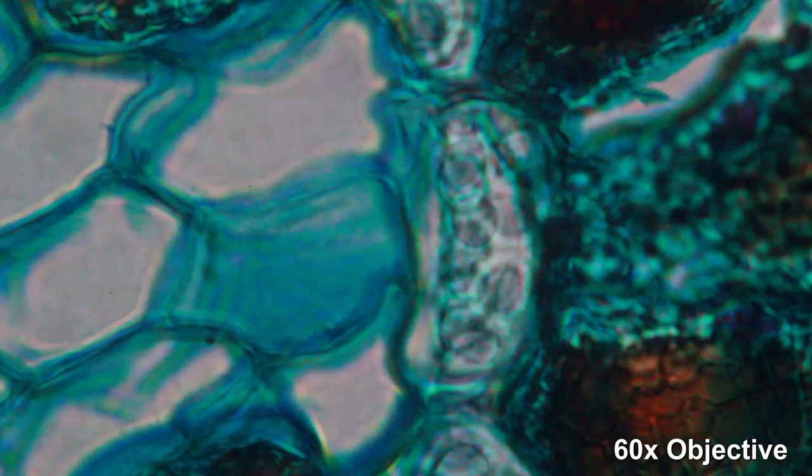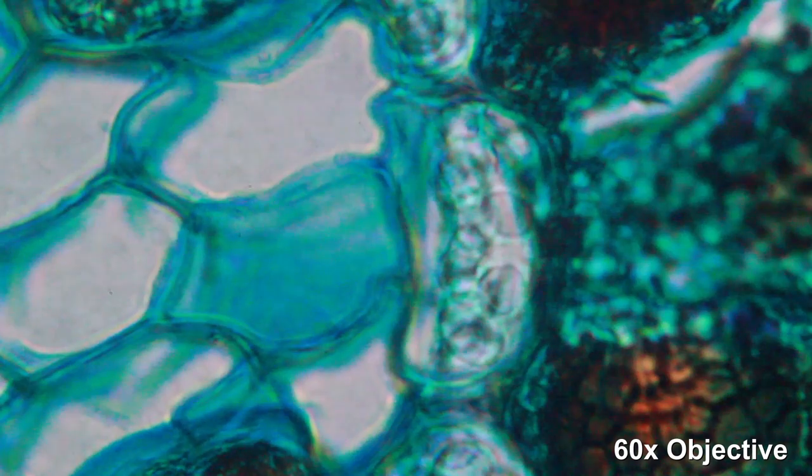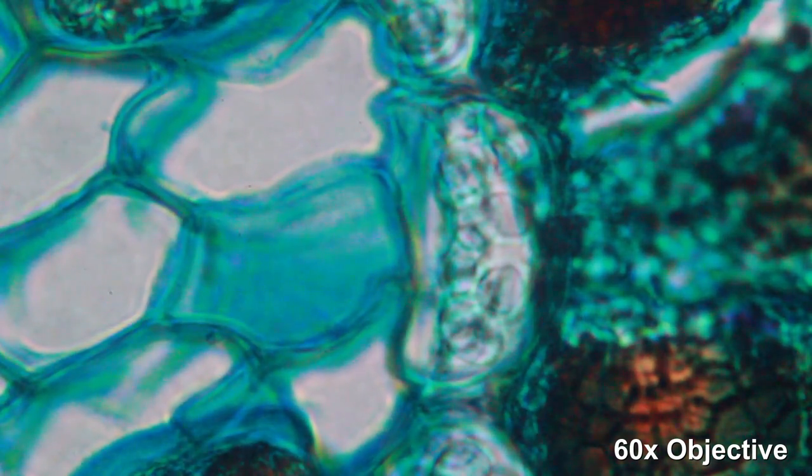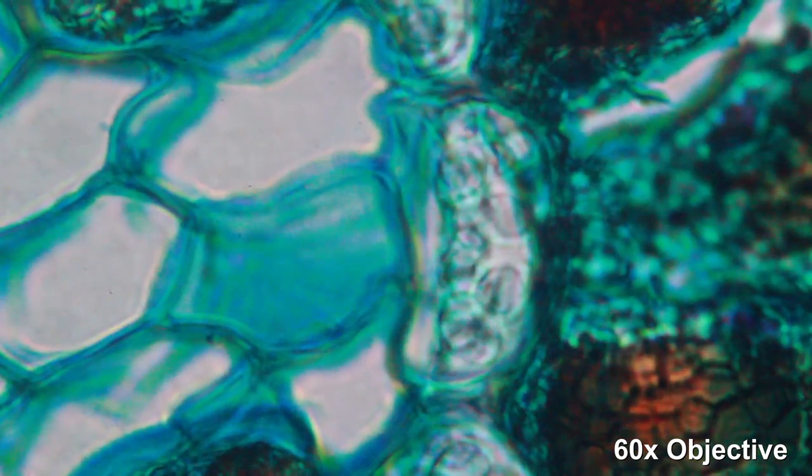Here, again, a large magnification of an endodermis cell. I think that these structures in there could be starch storage grains. I'm not quite sure about that, but I think that this could indeed be the case.